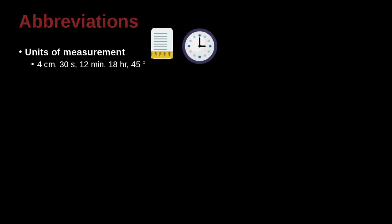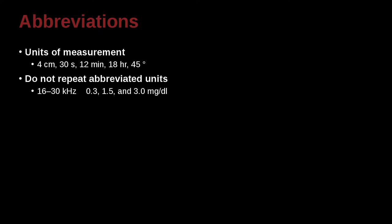Abbreviations for measurement can be a little bit troublesome sometimes. So we have things like cm, centimeters, s for seconds, min for minutes, hr for hours, and the degree sign for degrees. So for these measurements, you would use the abbreviations no matter what, and you don't need to explain them. You don't need to repeat when you're using numbers that are grouped together. For example, 16 to 30 kilohertz. You do not need to write 16 kilohertz to 30 kilohertz. You can just write 16 to 30 like this, or the other example next to it, which is the 0.3, 1.5, and 3.0 milligrams per deciliter. So in this case, you do not need to write the mg/dL, mg/dL. You just go ahead and write it on the last one only.